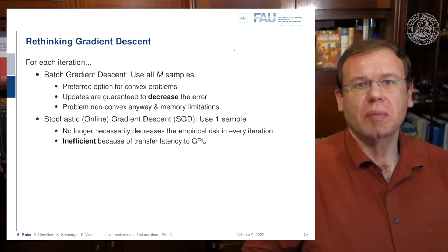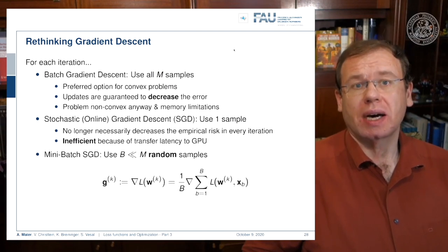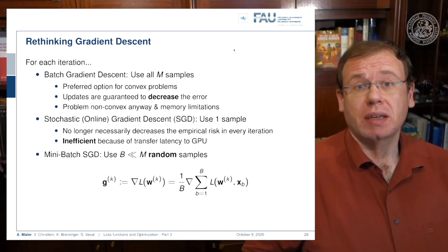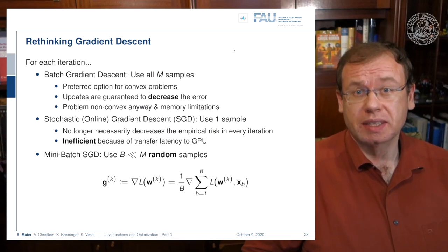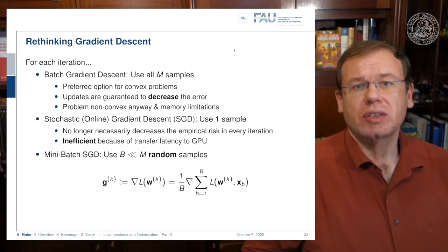However, if you just use one sample you can do many things in parallel, so it's highly parallelizable. A compromise between the two is to use the so-called mini-batch stochastic gradient descent. Here you use b, and b may be a number much smaller than the entire training data set—random samples that you essentially choose randomly from the entire training data set.